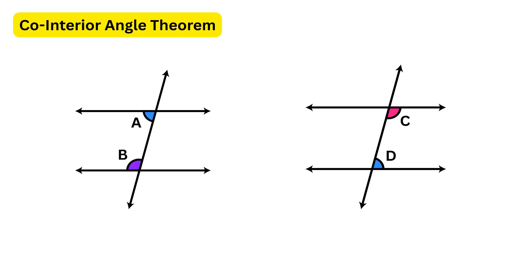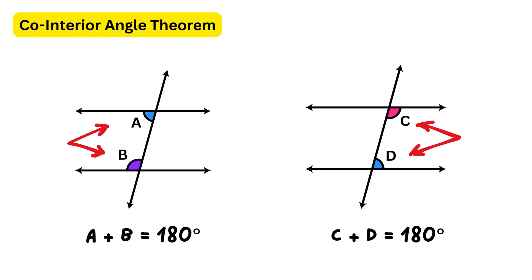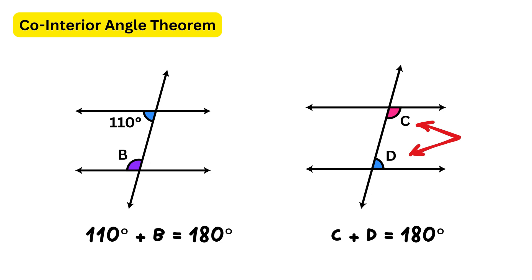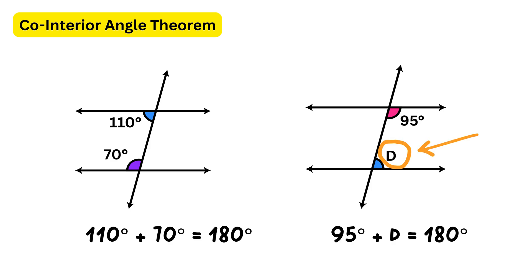Next is the co-interior angle theorem. When a transversal intersects two parallel lines, the co-interior angles — also called consecutive interior angles — on the same side of the transversal add up to 180 degrees. For example, if one co-interior angle measures 110 degrees, the other will measure 70 degrees, because 110 + 70 = 180.